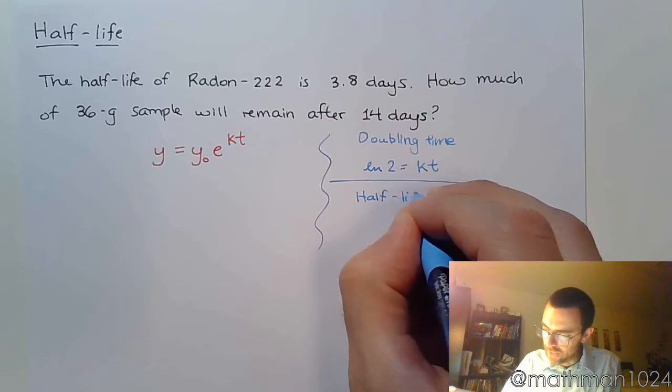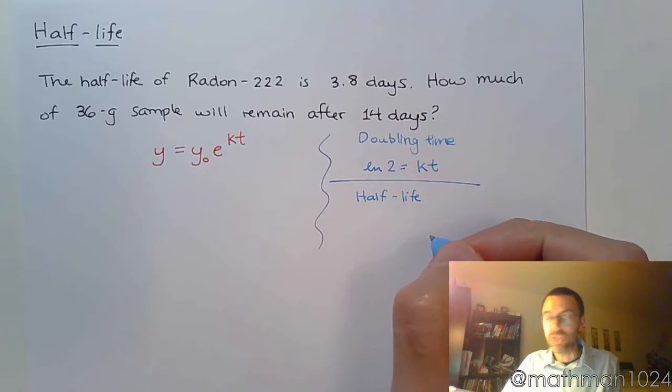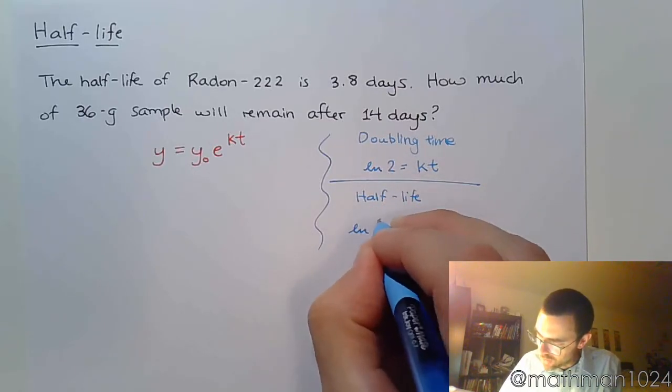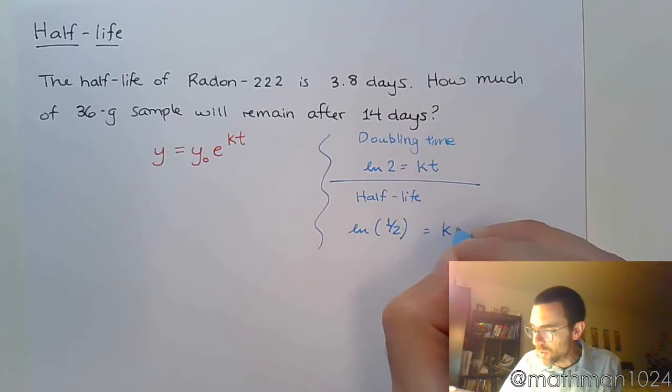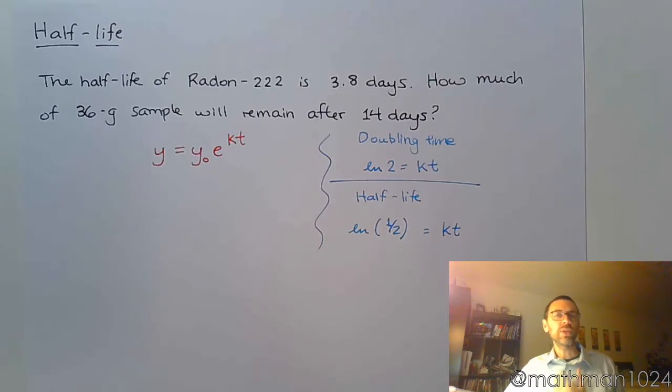Well, if you want to find the half-life, you don't want to double, you want to look at doing the natural log of 1/2, and that's going to equal k times t. So that's going to give you the same kind of relationship that we have for doubling and tripling time, but you're talking about half-life, so you're looking at the natural log of 1/2.